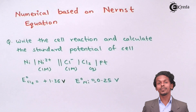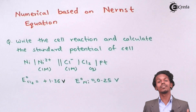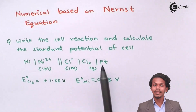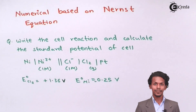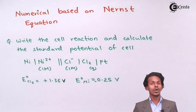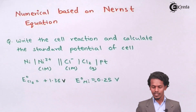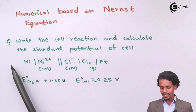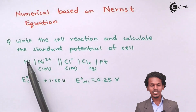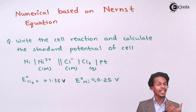Before finding the standard potential of the cell, we need to know which electrode is acting as the anode and which is acting as the cathode. We can estimate this from the cell formula. According to IUPAC convention, the electrode present on the left side of the cell formula is said to be the anode.